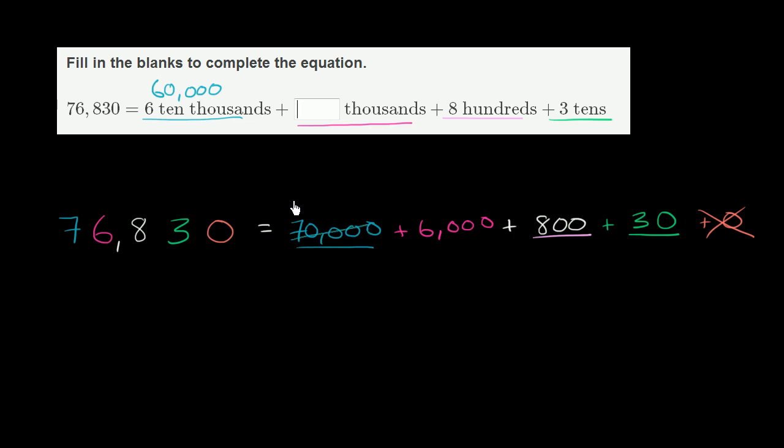So let's get rid of 10,000 out of the 70,000. It becomes 60,000. So this becomes a six. And then we're regrouping that into the thousands place. So we're going to add 10,000 to the thousands place. Now what's the thousands place going to be then? Well, it's 10,000 plus 6,000.